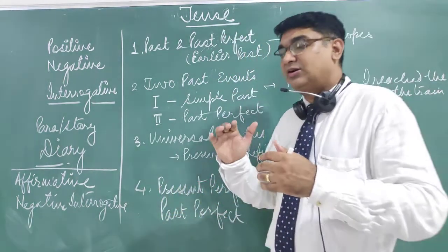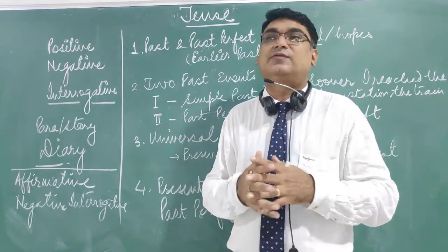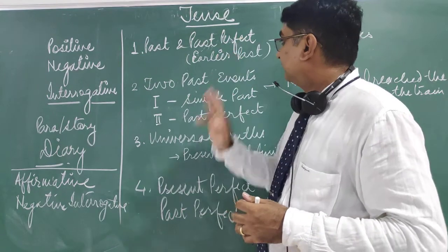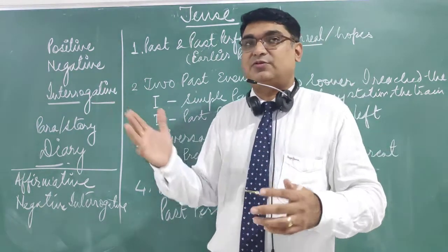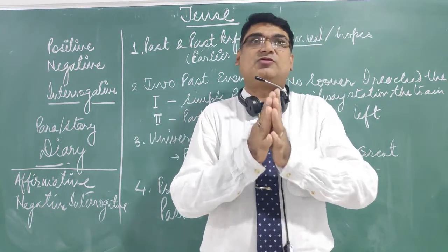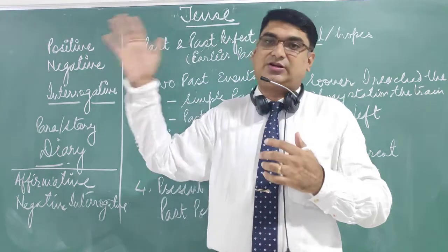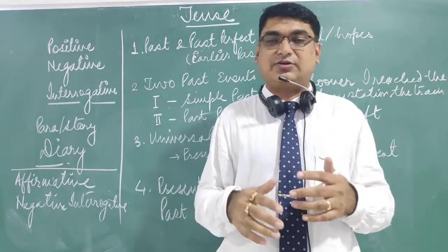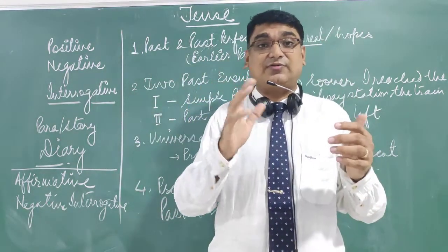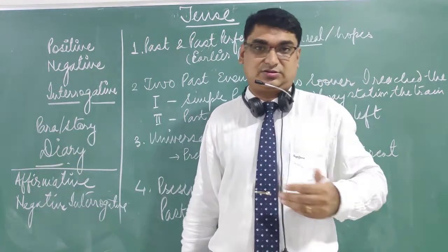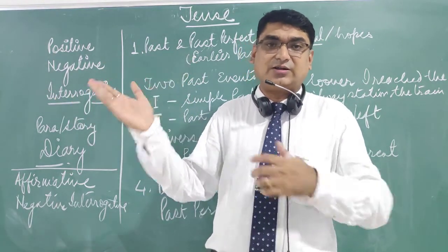The first question is: what if the event has already happened? I am taking for granted that you know all the 12 forms. Past and past perfect — what is the difference between past tense and past perfect tense? Past tense means any event which happened earlier. But past perfect is the past tense of the simple past — any event which had already finished by the time you are talking about.